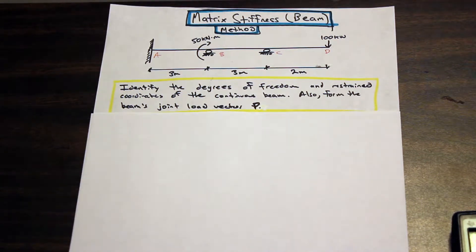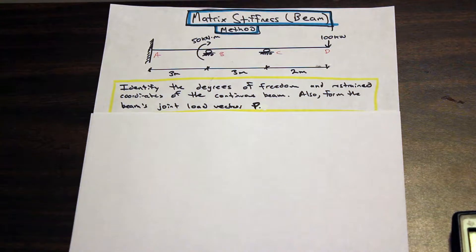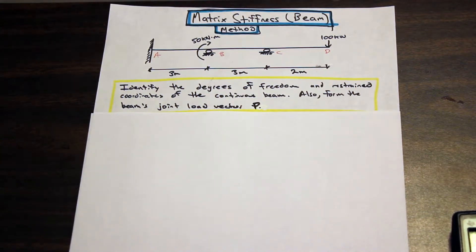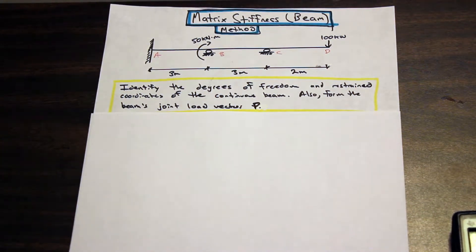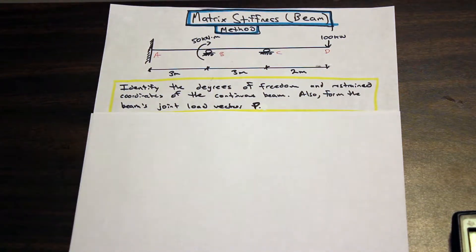This is a pretty straightforward video. We're going to identify the degrees of freedom and the restrained coordinates of the continuous beam, which is a really important part of getting these questions correct. And also we're going to form the beam's joint load vector P.